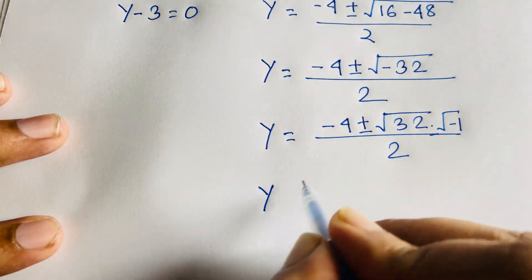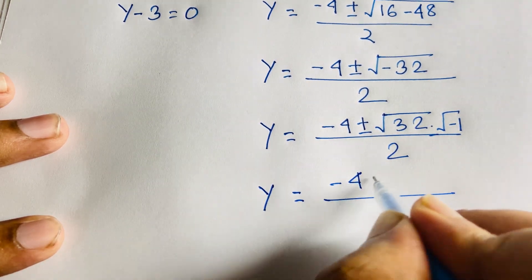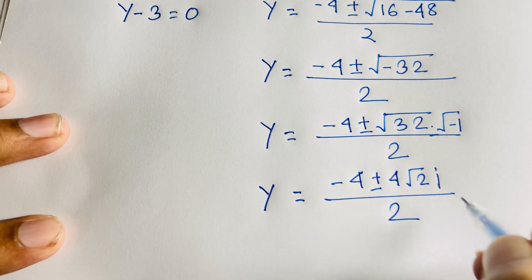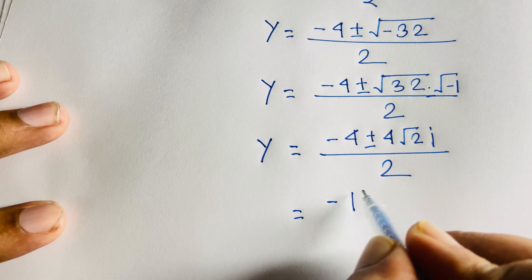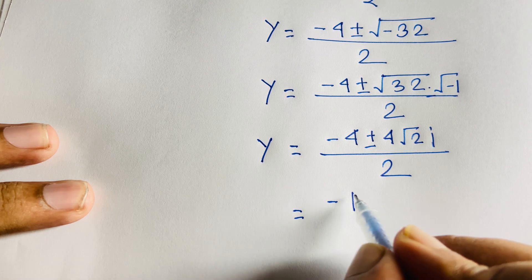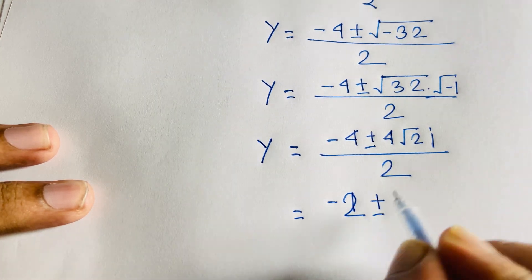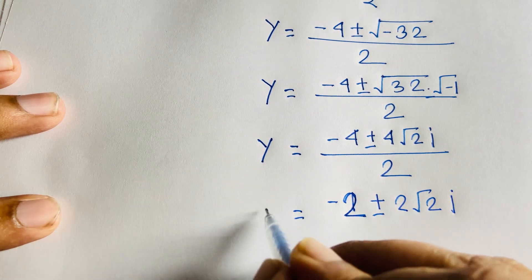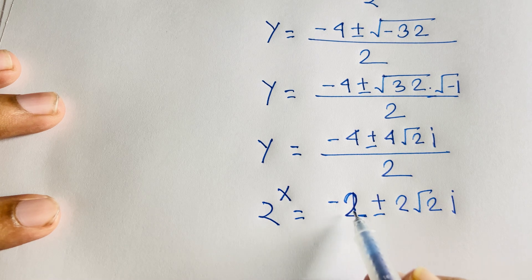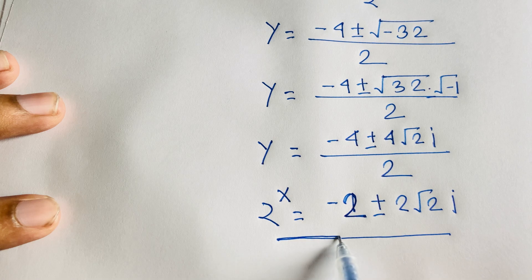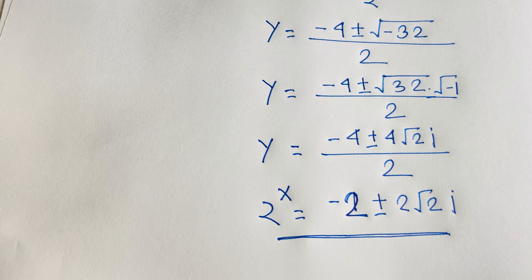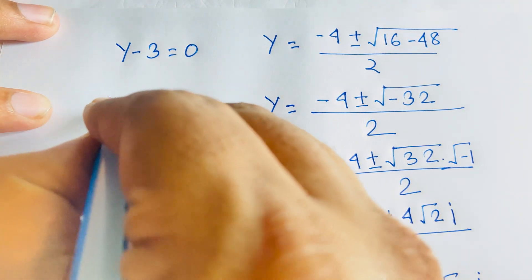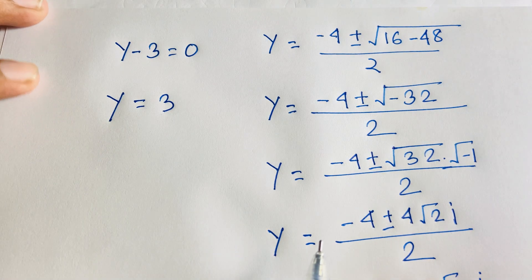Simplifying: √32 = 4√2, so y = (−4 ± 4√2·i) / 2, giving y = −2 ± 2√2·i. Since y = 2^x, this would mean 2^x equals a complex number, which is undefined for real x. So this case gives no real solution. From Case 1: y minus 3 = 0, so y = 3.